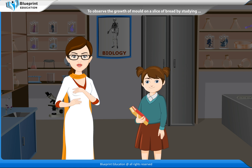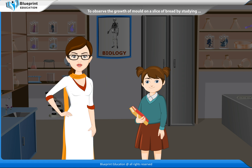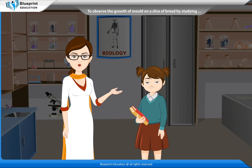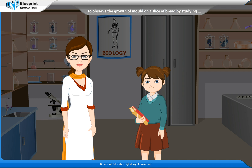In saprophytic mode of nutrition, the organisms obtain their food from dead and decaying organic matter of plants, animals and other decomposing organisms. These organisms are called saprophytes — for example, fungi,